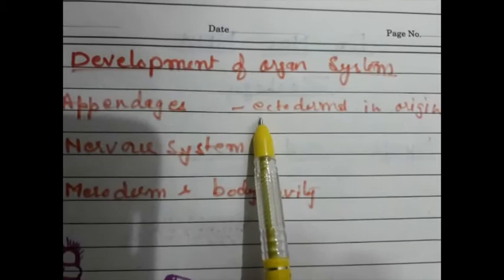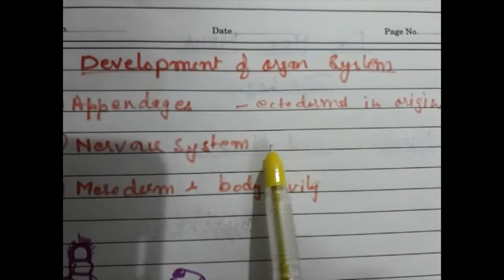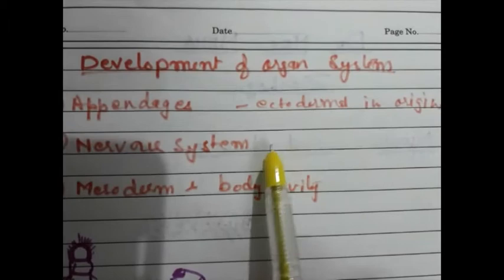Development of organ systems: appendages, which are ectodermal in origin; nervous system, also ectodermal in origin; and mesoderm and body cavity.